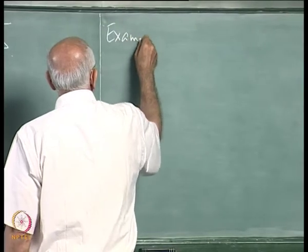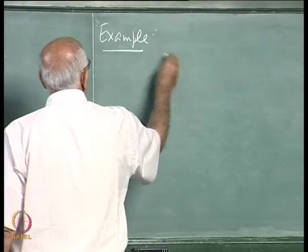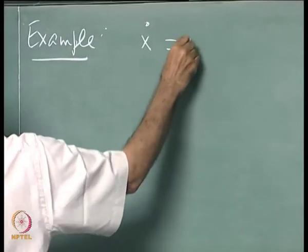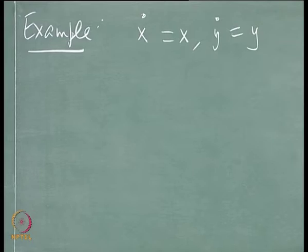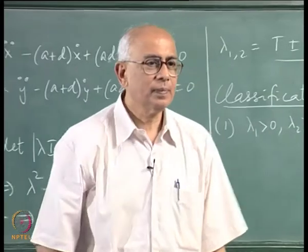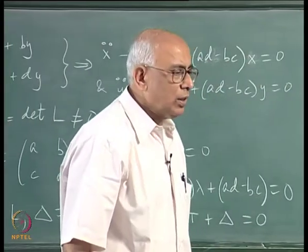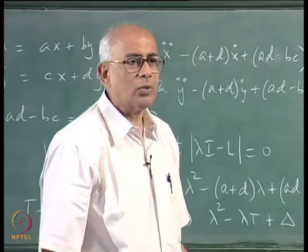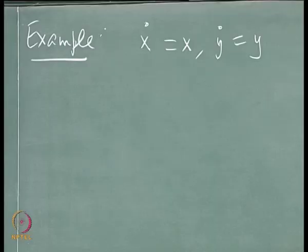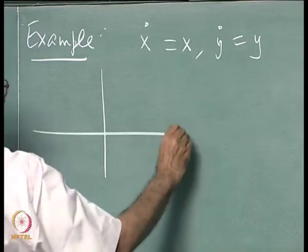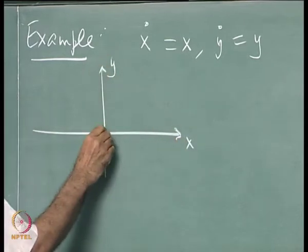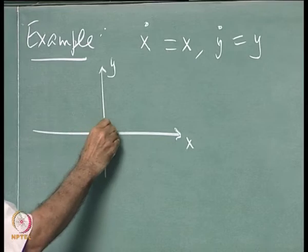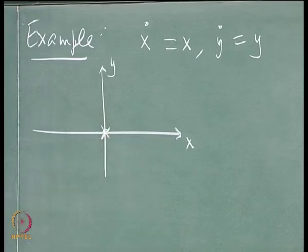The example is x-dot = x, y-dot = y. The linear matrix L is just the unit matrix, and the two eigenvalues are both +1, a repeated eigenvalue. In the phase diagram — here is x and here is y — the critical point is clearly unstable because everything flows outwards. If I start at any point on the x-axis, I flow outwards; the same in every direction.